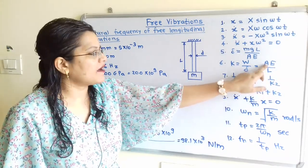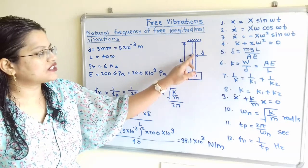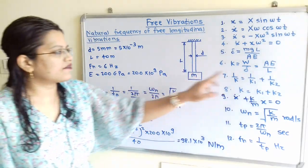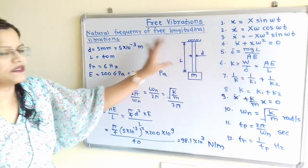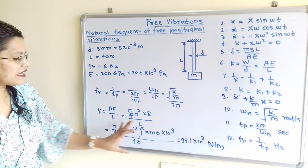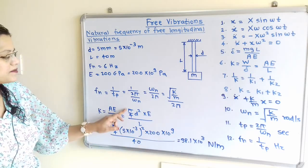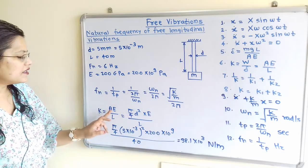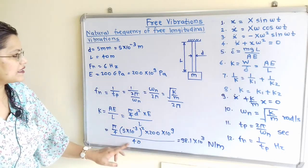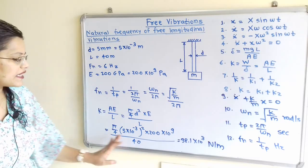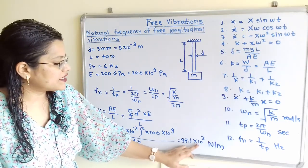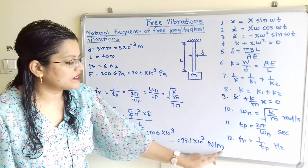Here A is the cross-sectional area, E is the elasticity mentioned in the question, and L is the length of the wire. So A equals pi by 4 times D squared, multiplied by E which is 200 into 10 raised to 9, divided by L which is 40. Calculating this gives k equals 98.1 into 10 raised to 3 Newton per meter.